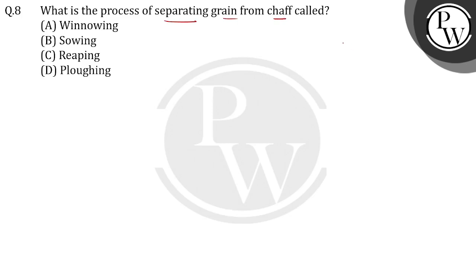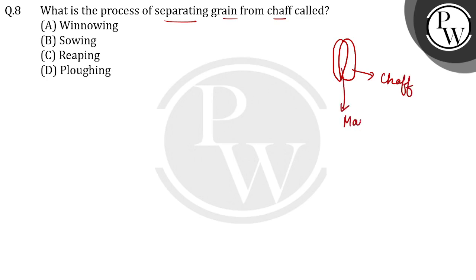So, aise process ko hum bolte hain winnowing. Jis mein hum kya kerti hain — yeh hain suppose hummara main grain, iske charo taraf present hoota hai ek coat, jis ko hum bolte hain shaft. So this is shaft, and inside part is called as main grain. So hume main grain ko separate karna hai shaft se. So is process ko bola jata hai winnowing.